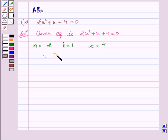Therefore, D equal to b square minus 4ac.